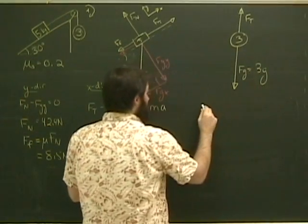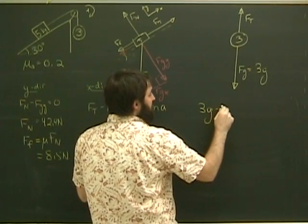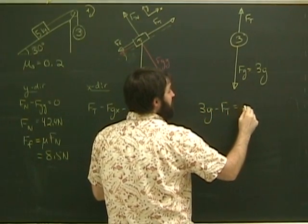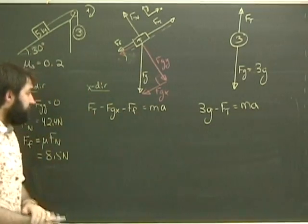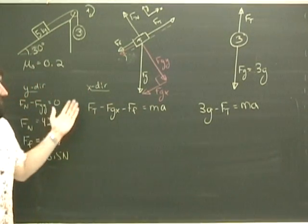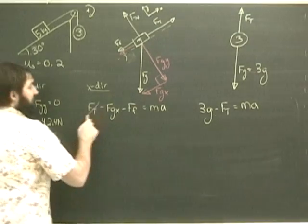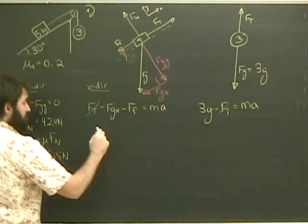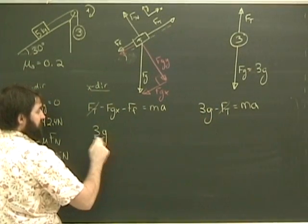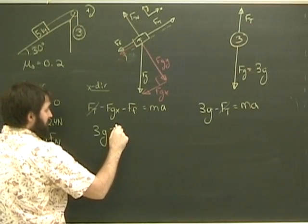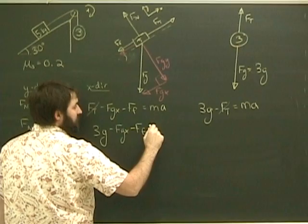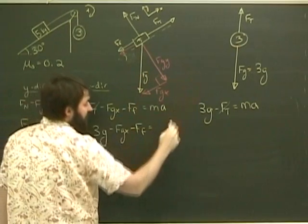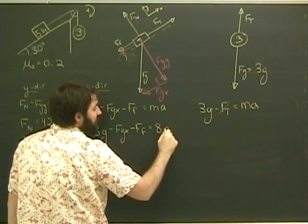I look over here, in this case 3g is positive, so 3g minus Ft equals ma. I'm going to add these two equations like I did last time, the tensions will cancel out, and we'll end up with an expression that looks like this: 3g minus Fgx minus Ff equals 5 plus 3a, which is 8a.